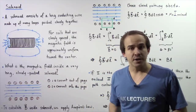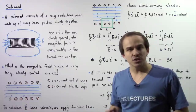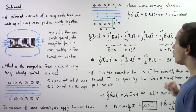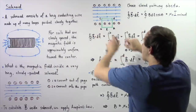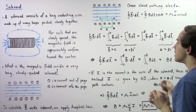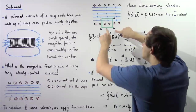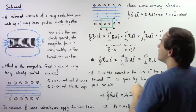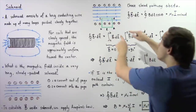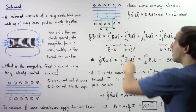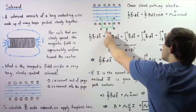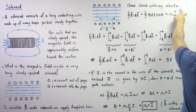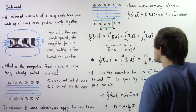To apply Ampere's law, we have to choose a symmetrical closed pathway. Let's choose the following square pathway. We begin at point A, move to point B, to point C, to point D, and back to point A. The length of one edge of our square is given by L. So we choose the closed square pathway A, B, C, D, A.